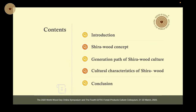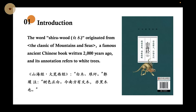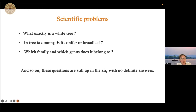The presentation will cover the following five aspects. In the first part, I'm going to begin with the word Bai Mu — the word Shirawood in Chinese — which we call Bai Mu, originating from the Classic of Mountains and the Seas, a famous ancient Chinese book written 2000 years ago, whose annotation refers to white trees. So we have a few scientific problems: what exactly is a white tree? In tree taxonomy, is it conifer or broadleaf? Which family and genus does it belong to? These questions are still up in the air with no definite answers.